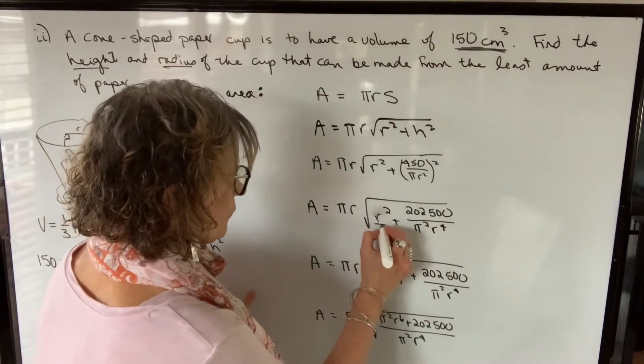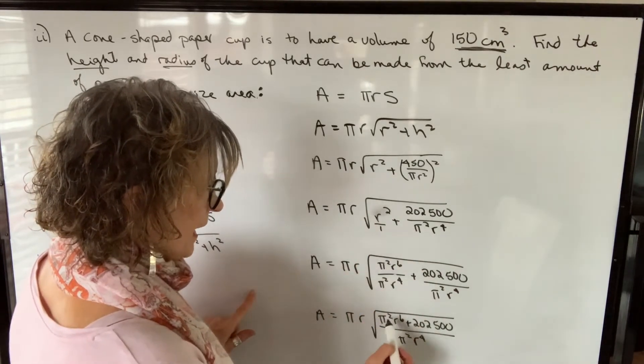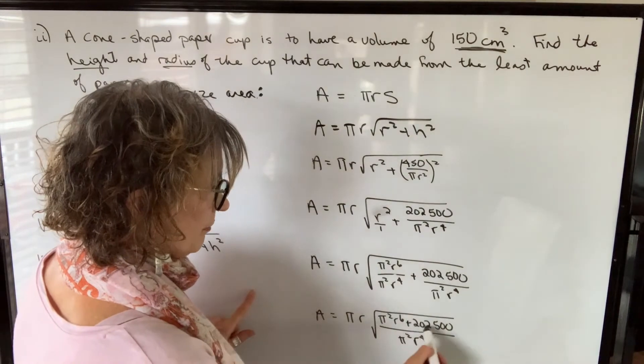Then I'm going to combine these two terms by getting a common denominator. So I needed to change this. This is like r squared over one. So I needed to multiply numerator and denominator by pi squared r to the fourth. Then when I have a common denominator, I can combine these.